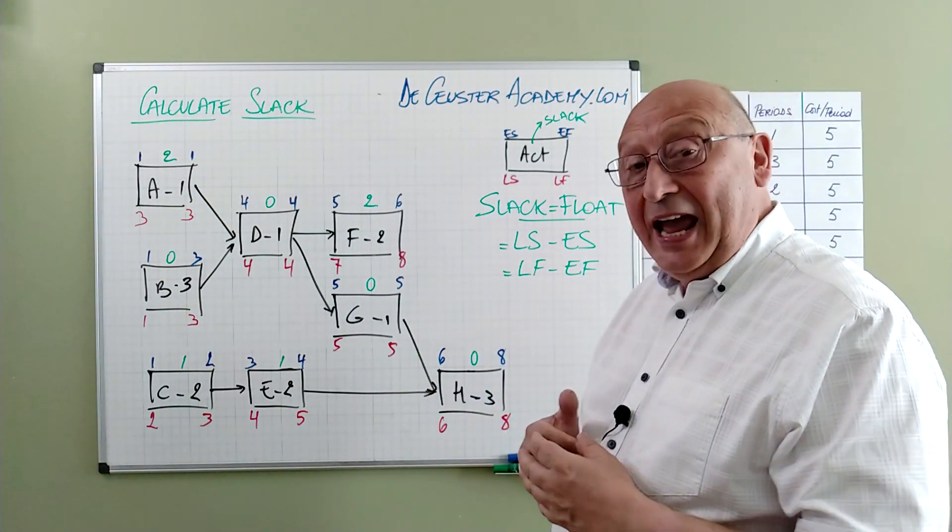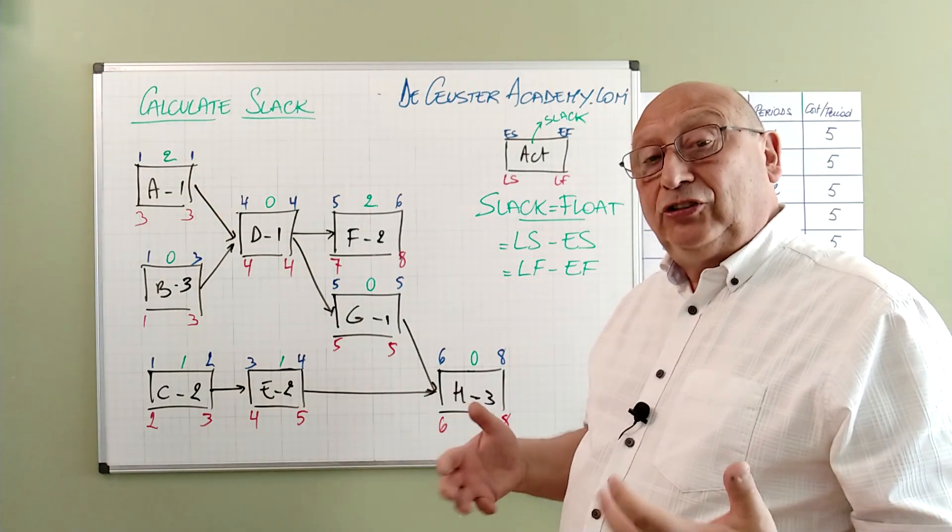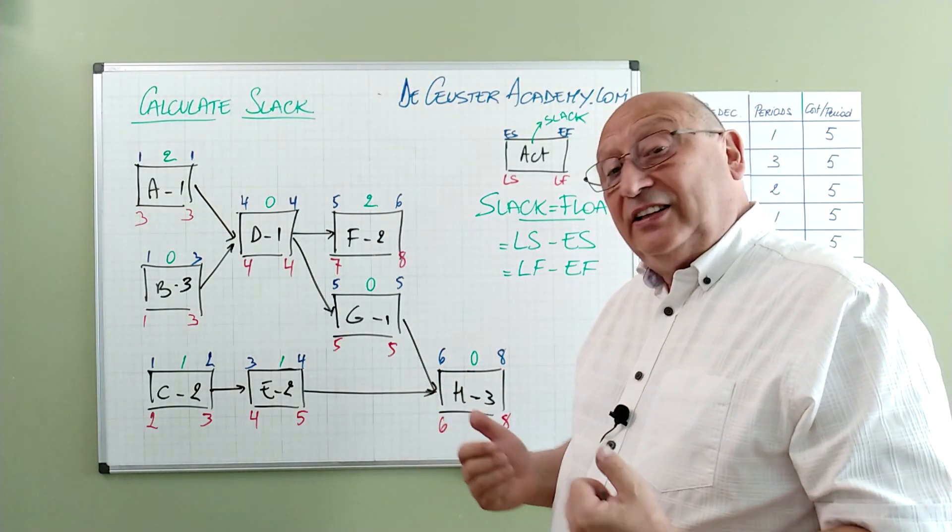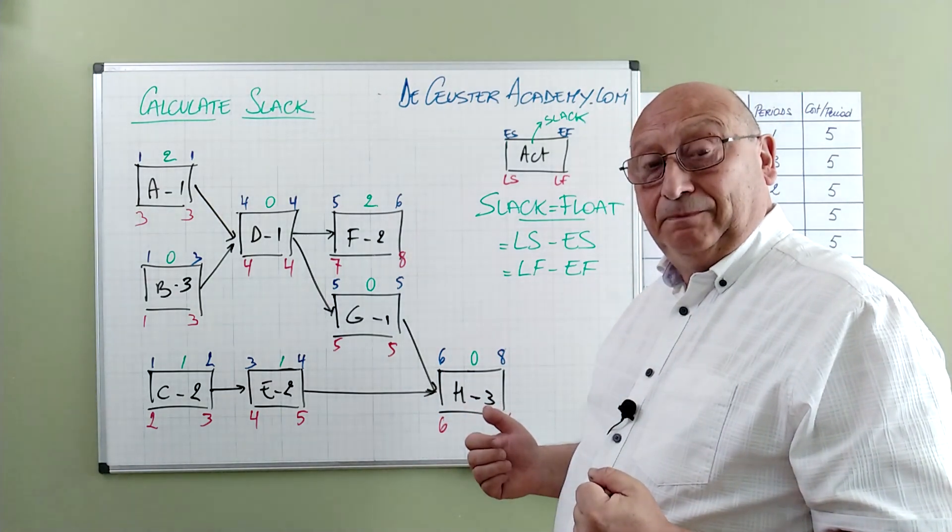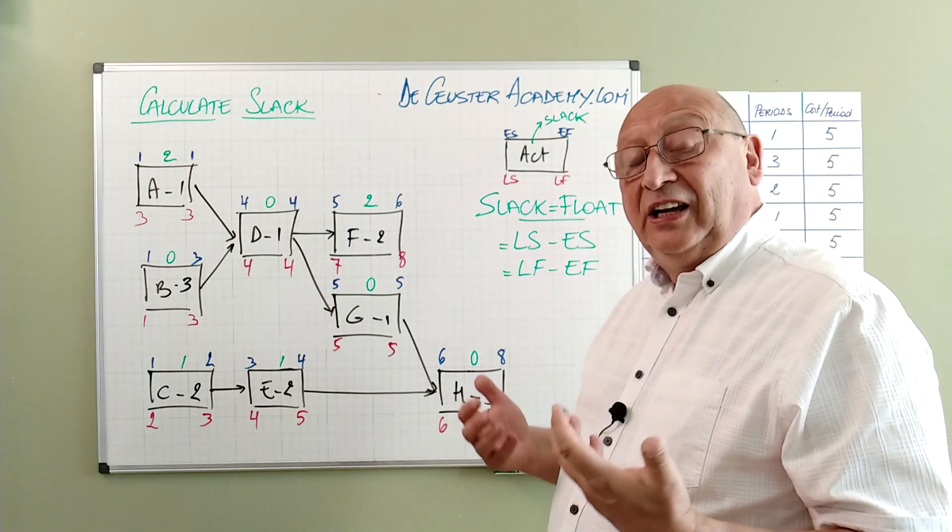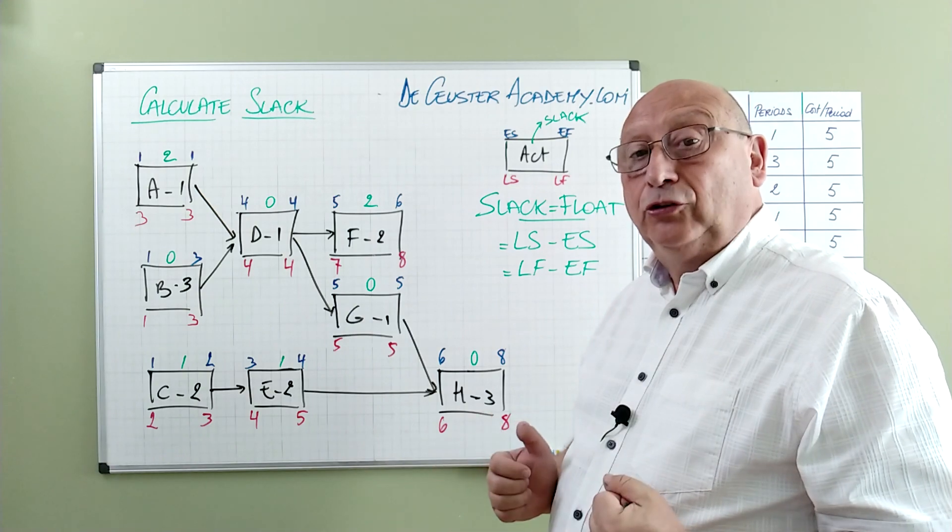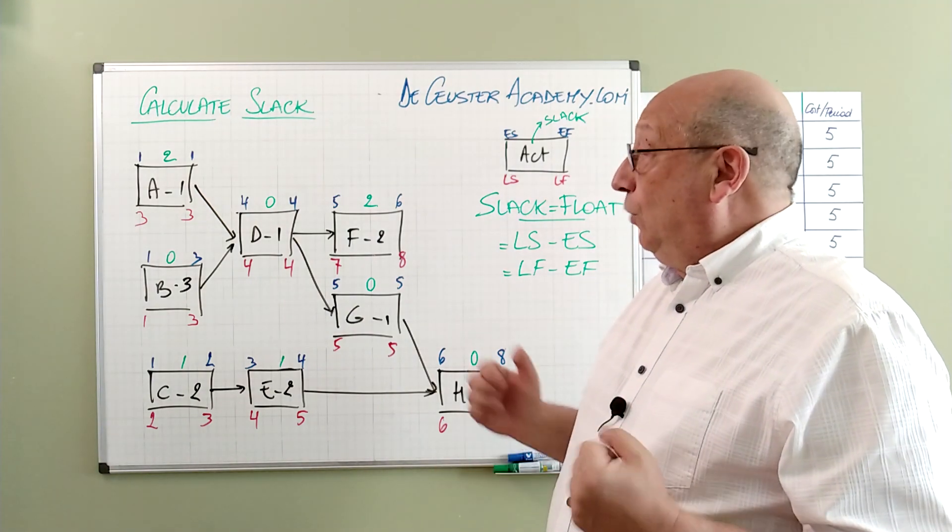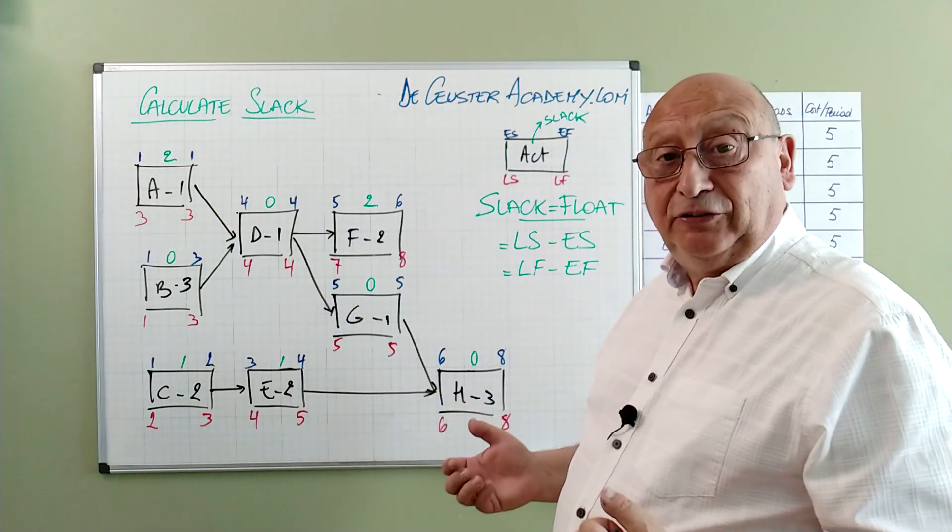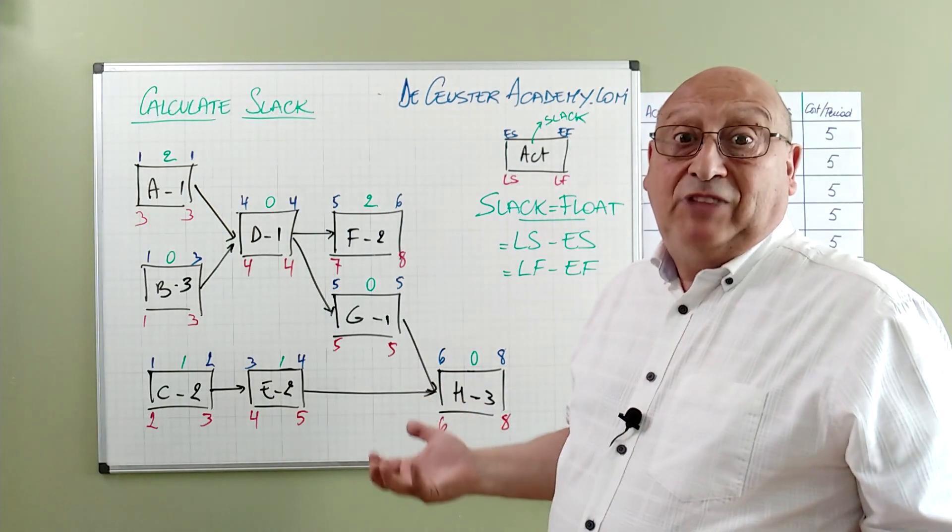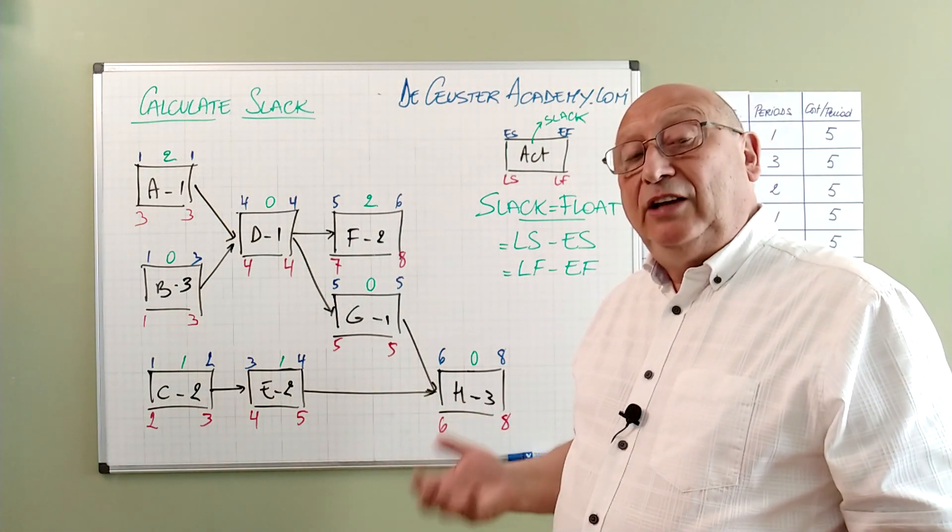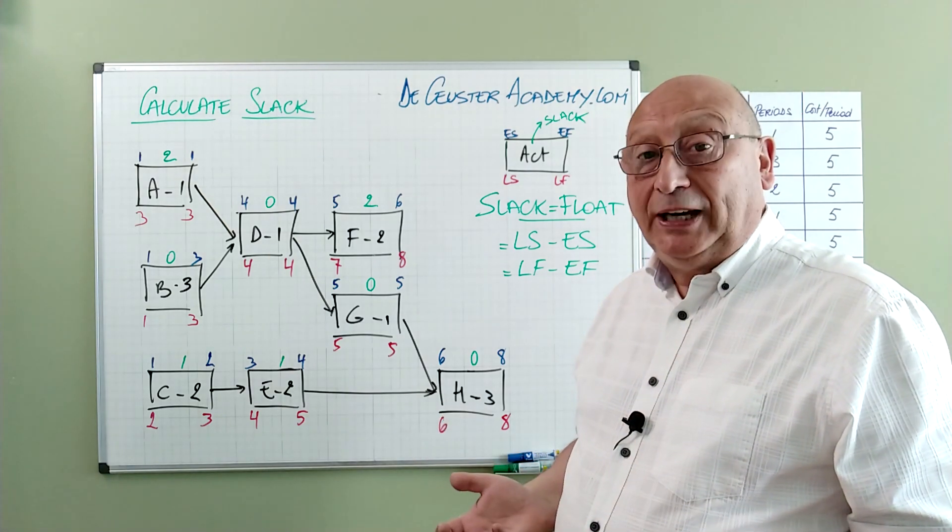On the other hand when we have for example activity A. As long as A doesn't start or later than the late start or finishes later than the late finish, it will have no impact on the duration of the project. What can happen here? Well our activity A can take three periods without influencing the duration of the project.